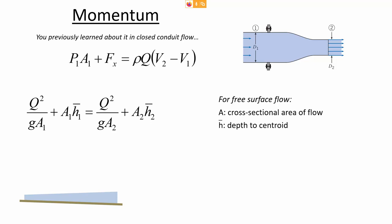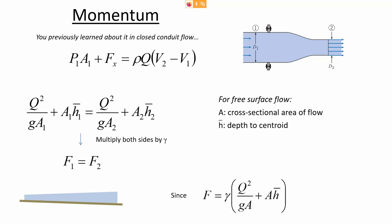We can also discuss the momentum relationship in open channel flow. When water is flowing downstream and the flow depth is changing, these conditions are not uniform. We can do an analysis of the momentum using the momentum function, which has two components: a kinetic component and a static component related to the motion of the water and the depth of the water. If we multiply the momentum function on both sides at upstream and downstream locations by gamma, the sum of the forces at those two locations are equal to each other.